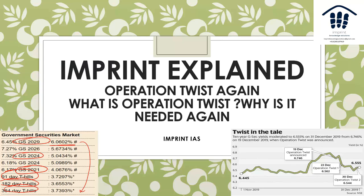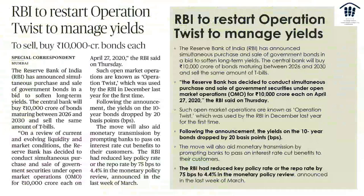This is a huge problem for the government because when they want to go into the market to raise money again, this can lead to problems. When the government wants to soften the 10-year yield, we do something known as Operation Twist. The RBI has announced the simultaneous purchase and sale of government bonds in a bid to soften long-term yields — buying 10,000 crores of bonds maturing between 2026 and 2030, and selling the same amount of treasury bills.